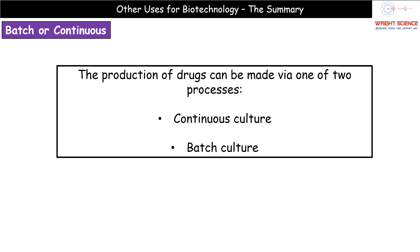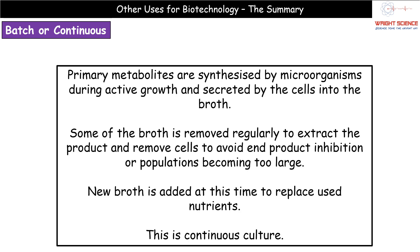We have two different processes available for producing our drugs: continuous culture and batch culture. Continuous culture is where we are producing primary metabolites. Primary metabolites are synthesized by our microorganisms during their active growth phase, and at this point they simply secrete these metabolites into the surrounding broth. During continuous culture, we remove a proportion of the broth from the fermenter and extract our product from it. This also helps avoid end product inhibition and populations becoming too large.